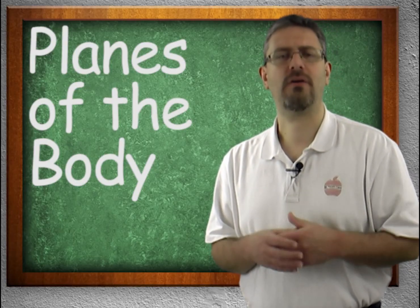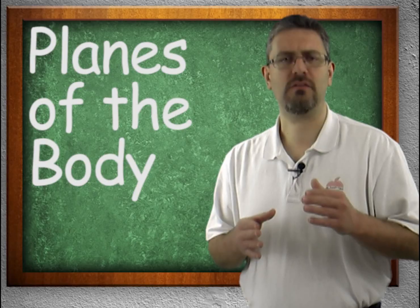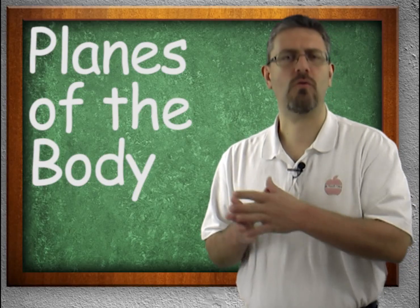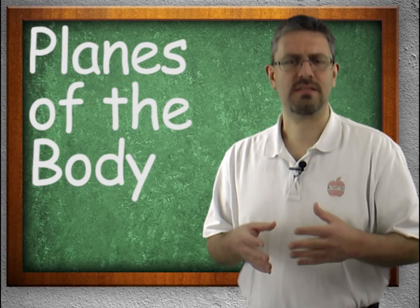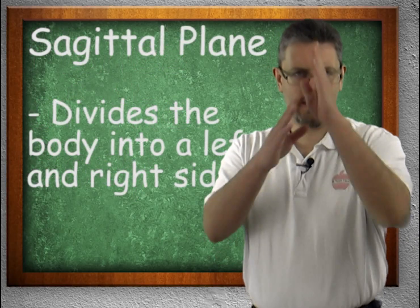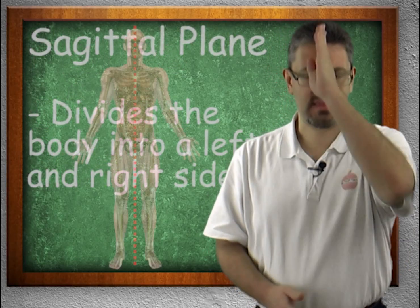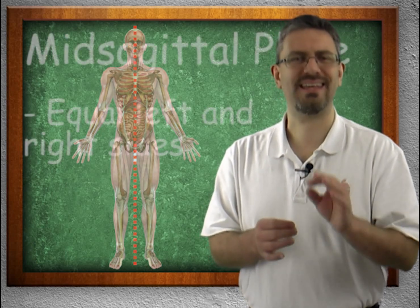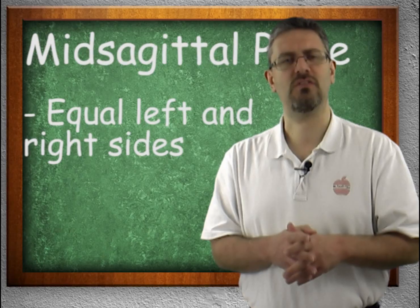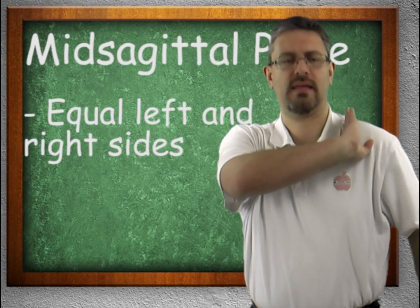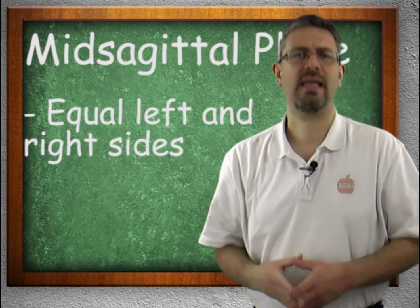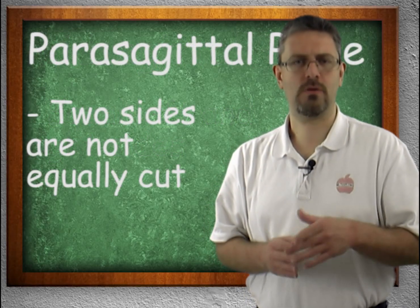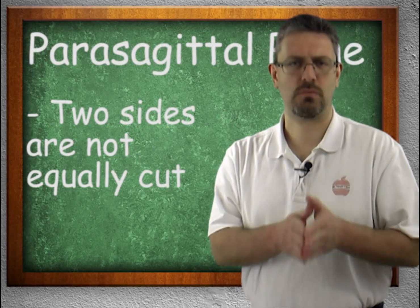We begin by talking about cutting the body into a left side and a right side — this is called a sagittal plane. It cuts through and creates a left side and a right side. If it creates an equal left and right, it's called mid-sagittal. If it divides the body into an uneven left and right — a cut off to one side — then we have a parasagittal cut. So a left and a right side is a sagittal plane.